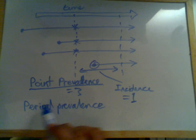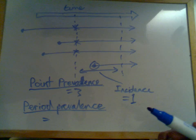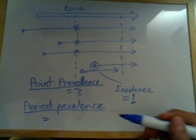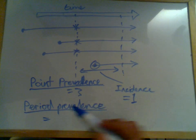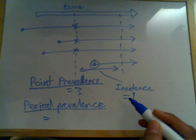Period prevalence tends to be used to measure episodic disease. For example, asthma, where you might want to measure asthma attacks. Or say you might want to measure epileptic fits. So we're talking about episodics, the key word, episodic disease.